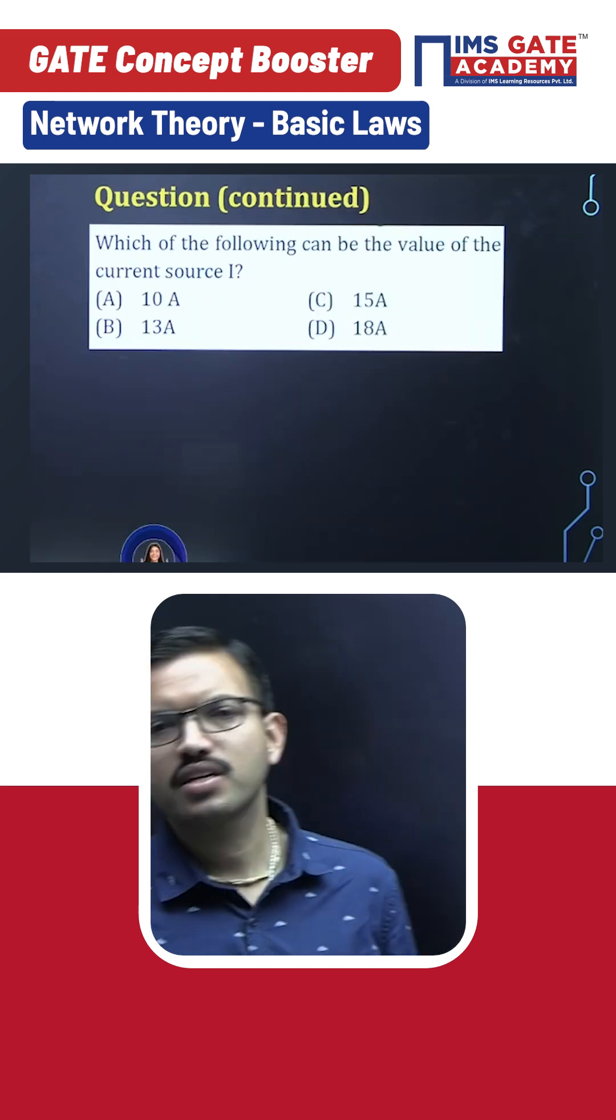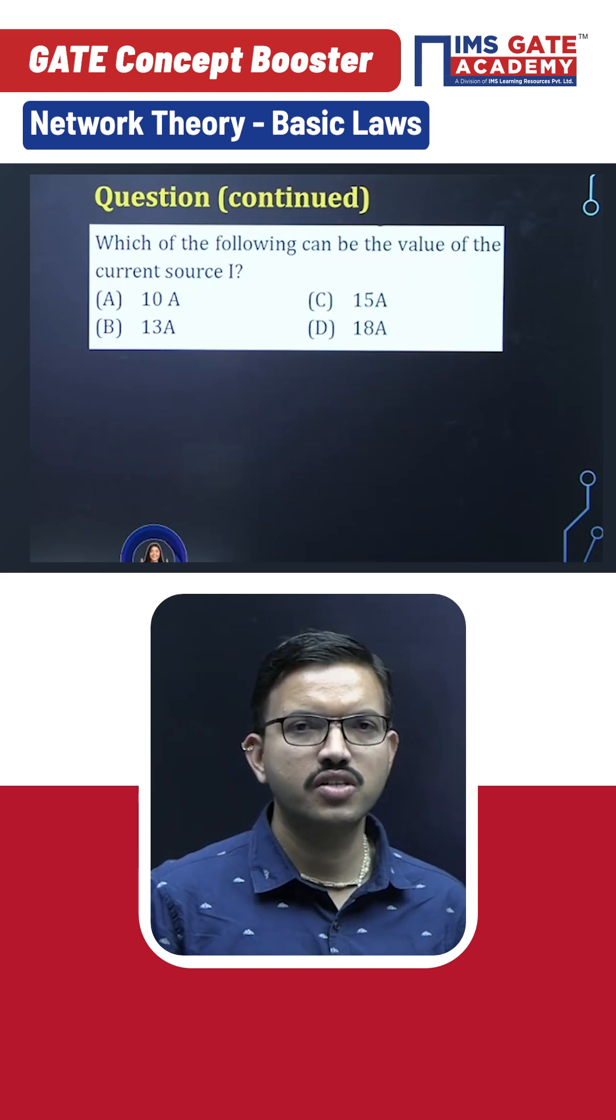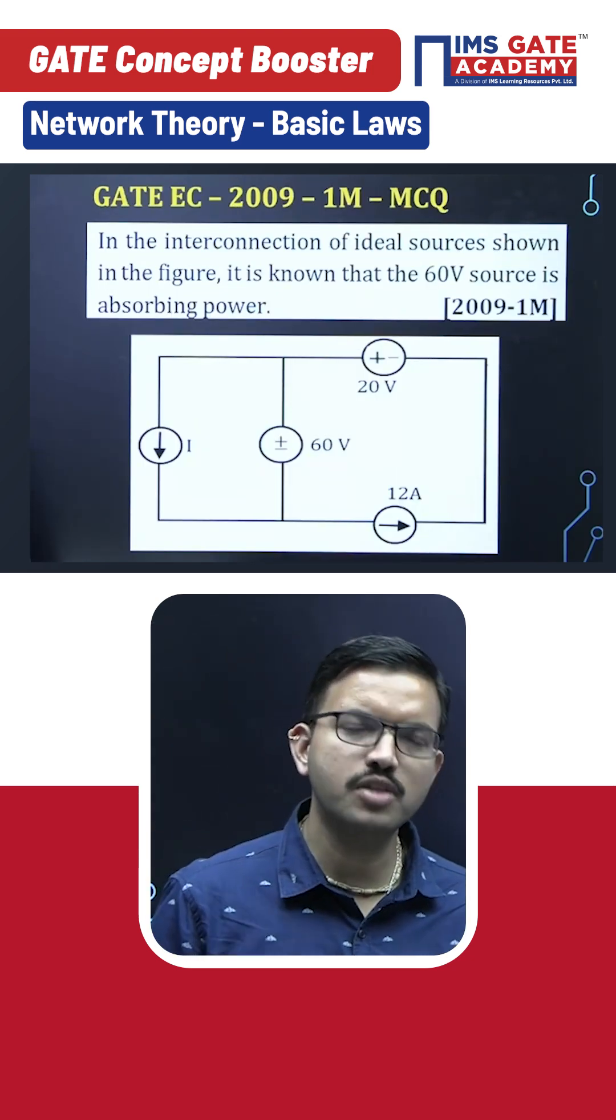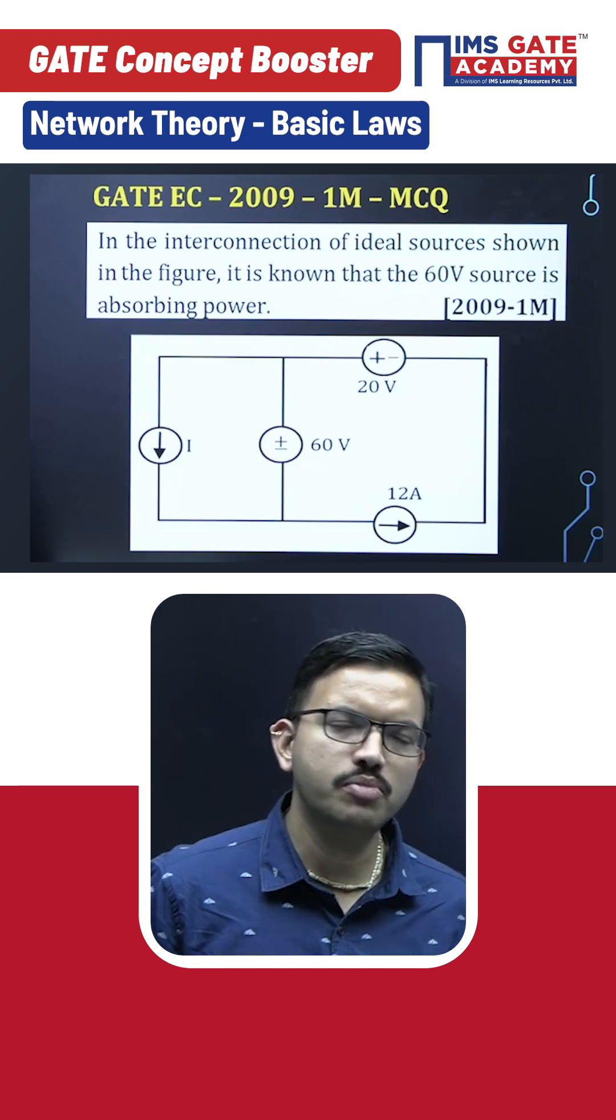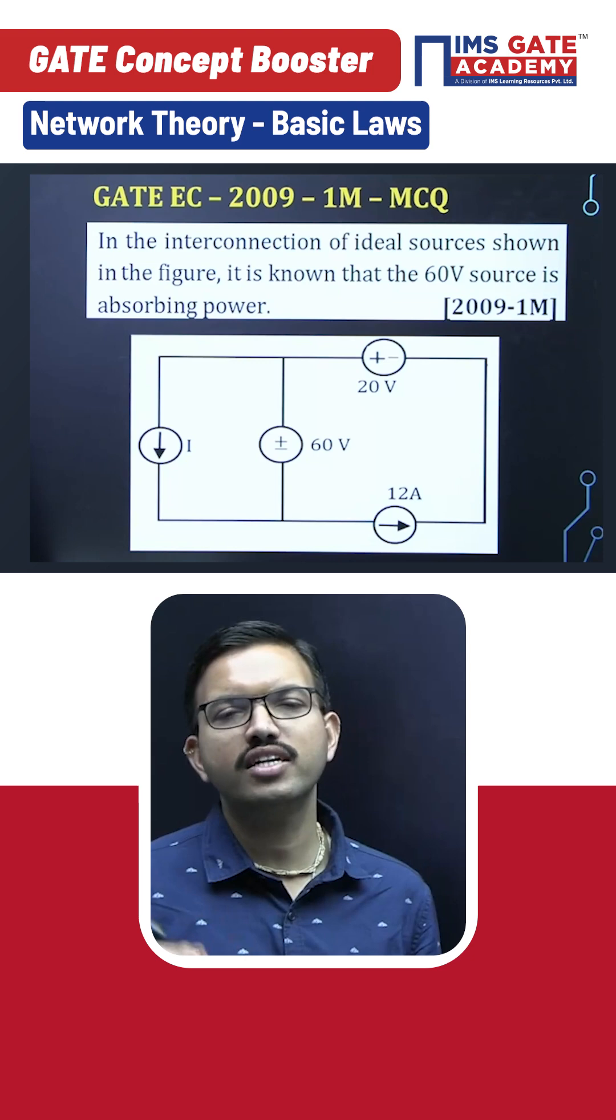In this question, since they have mentioned that the 60 volt source is absorbing power, should the current direction be upward or downward? If you are able to answer this question correctly, then definitely you can easily solve this problem.